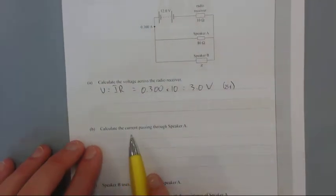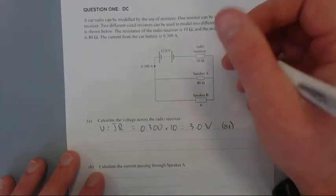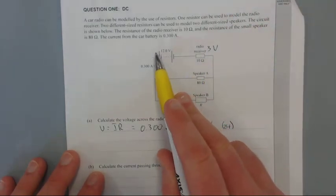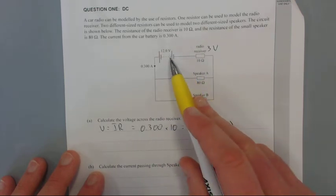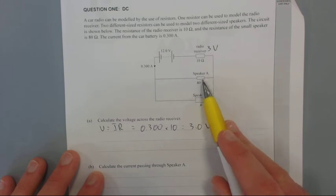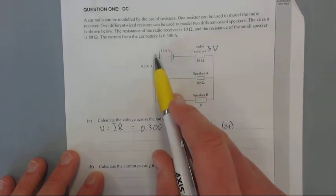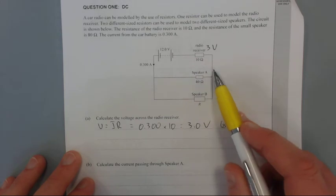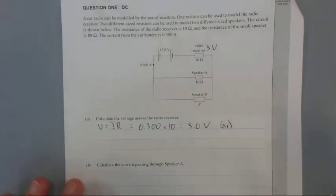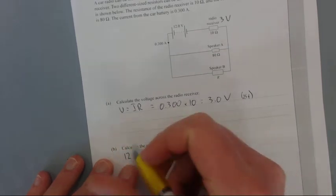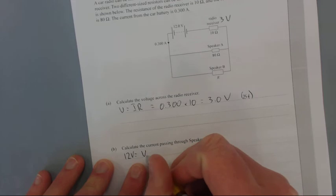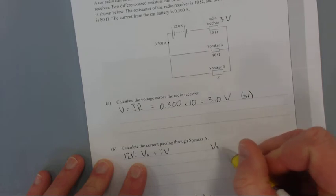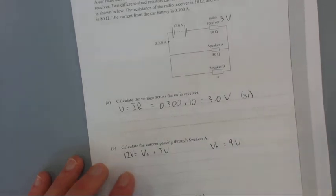Part B: Calculate the current passing through speaker A. We've got 3 volts going through the radio receiver. The total output for the battery is 12 volts. This 12 volts equals the voltage used by speaker A and the voltage used by the radio receiver, because if you do a closed loop, the sum of the voltages should equal zero. So 12 volts equals the voltage of A plus 3 volts. In other words, VA equals 9 volts. It's just some simple arithmetic.